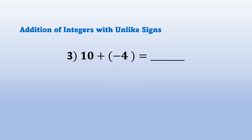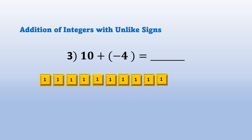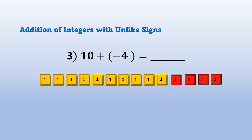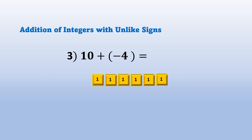Example number 3: 10 plus quantity negative 4. We have 10 yellow tiles to represent positive 10 plus 4 red tiles to represent negative 4. Just like in examples number 1 and 2, we take away by pair the yellow and red tiles — 1, 2, 3, 4. We have yellow tiles left; we're going to count. We have 6 yellow tiles. Therefore, 10 plus quantity negative 4 is equal to positive 6.